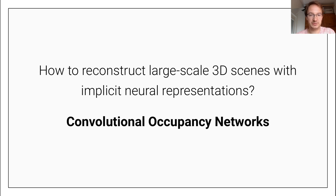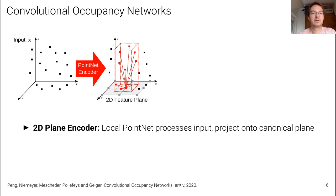That led us to the idea of convolutional occupancy networks. The core idea is to combine the advantages of convolutions with implicit representations. Here is a very simple form of our convolutional occupancy networks — I will show you multiple variants.